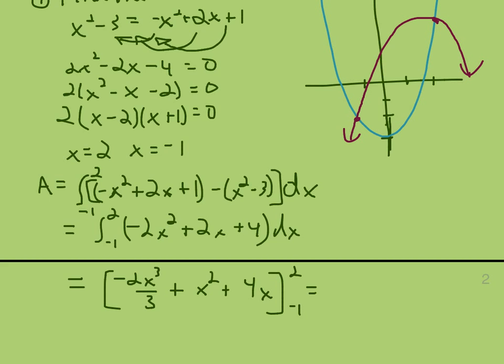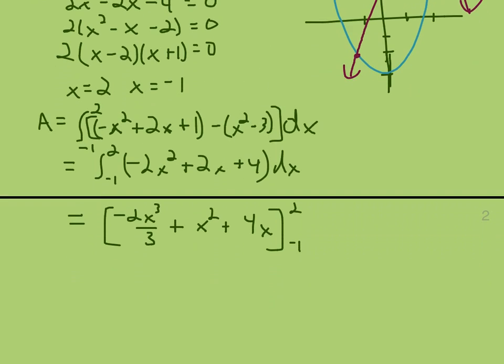And plug it in to 2. We're going to get negative 16 over 3 plus 4 plus 8. Careful plugging in negative 1. We'll get a positive 2 thirds plus 1 minus 4.